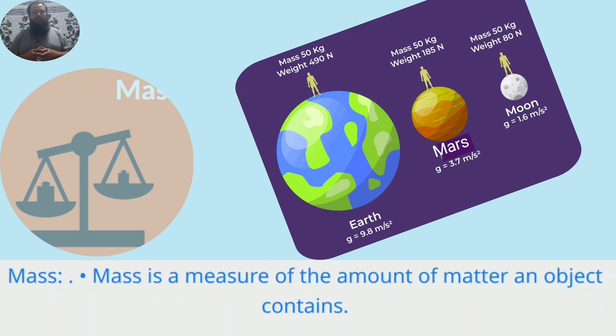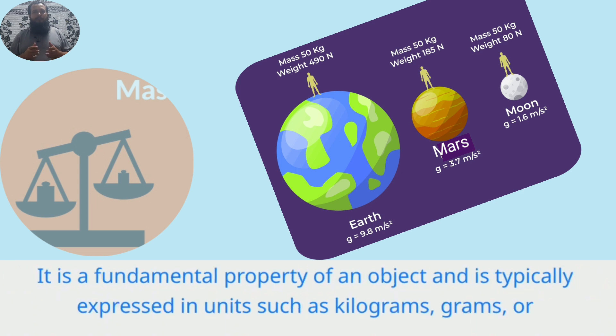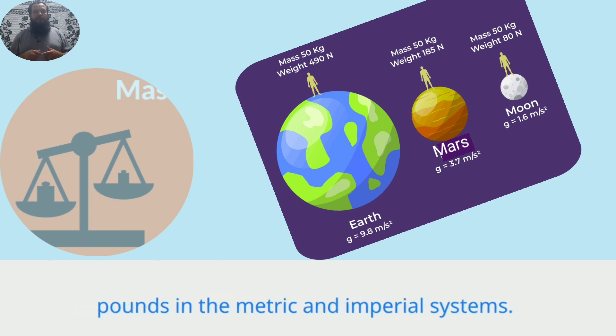Mass is a measure of the amount of matter an object contains. It is a fundamental property of an object and is typically expressed in units such as kilograms, grams, or pounds in the metric and imperial systems.